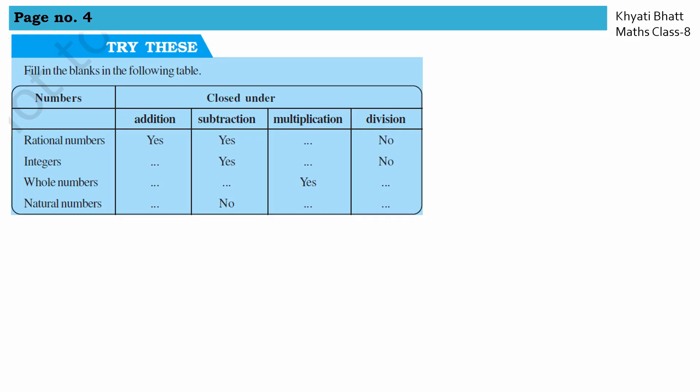Try the sums from page number 4 — fill in the blanks in the following table. In this numerical, they have given us numbers: rational numbers, integers, whole numbers, and natural numbers. We have to check whether they are closed under addition, subtraction, multiplication, and division.